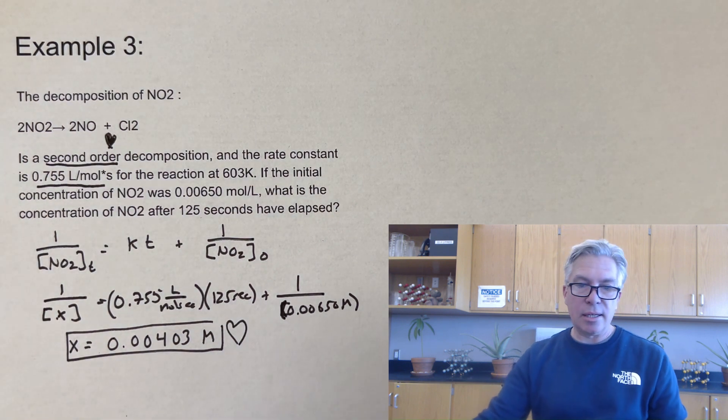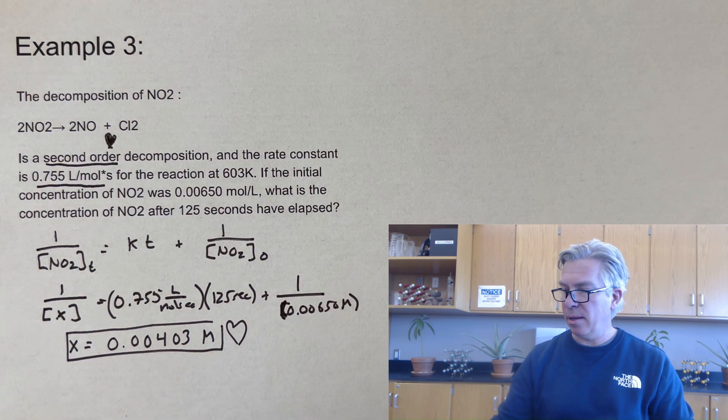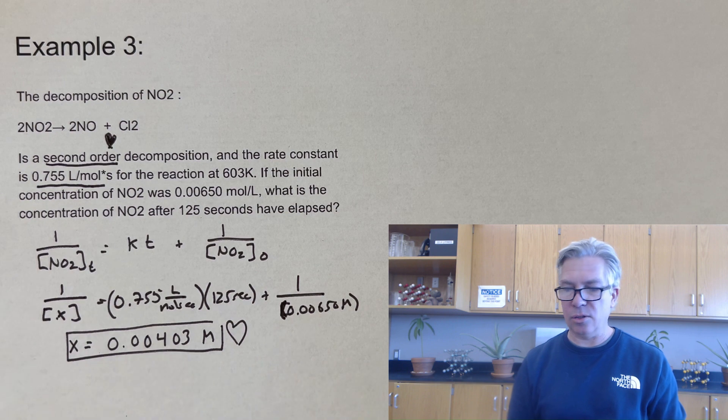And I get an X value of 0.00403 moles per liter, which makes sense to me because it is less than my original amount, not a lot less, but about, you know, down by about 30% or so. And that's the answer to that one.